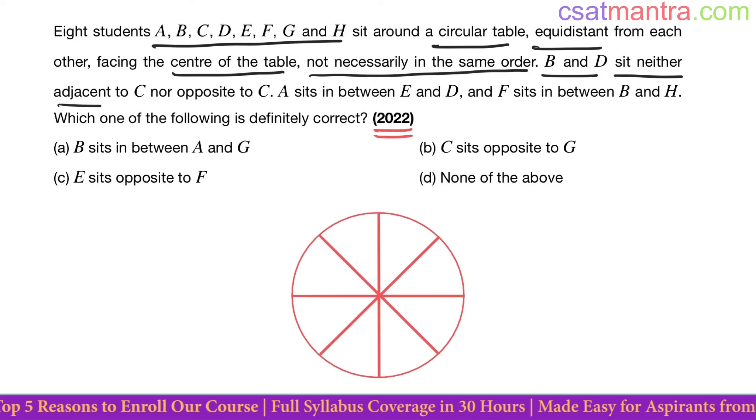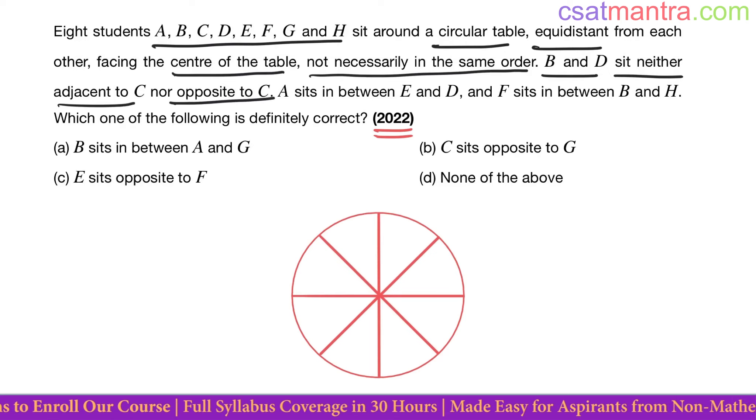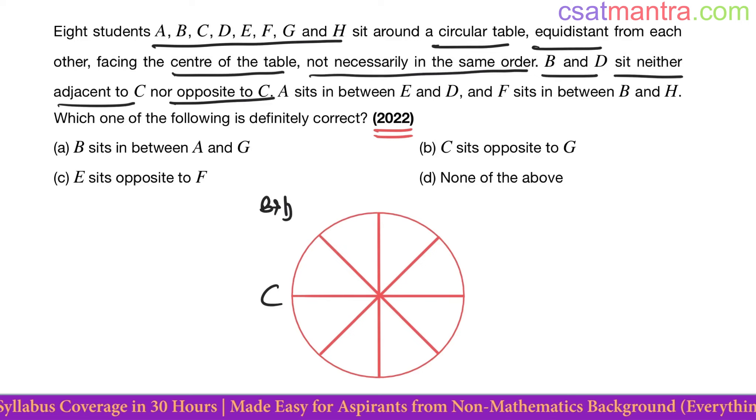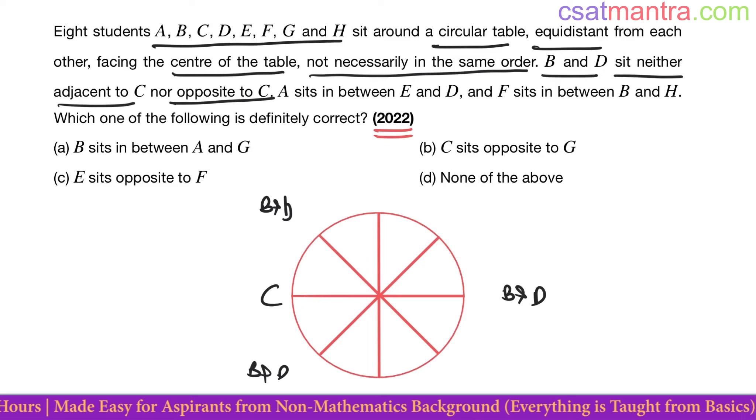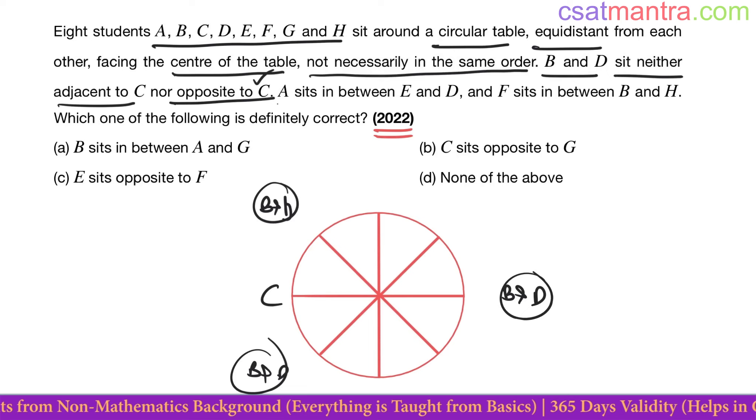Let's fix C's position. We cannot have B and D here, B and D here, B and D here - neither adjacent nor opposite. We cannot have them here.